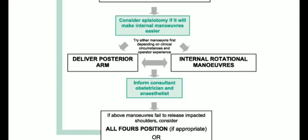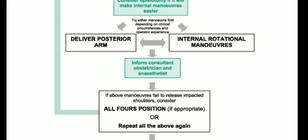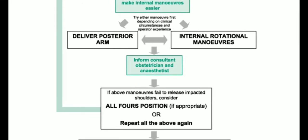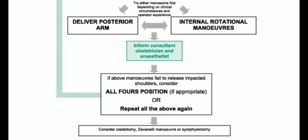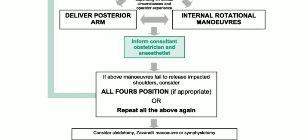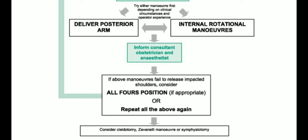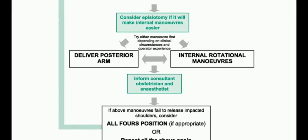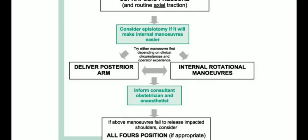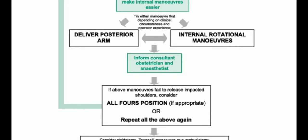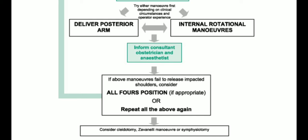I will give the link in the description. If those maneuvers fail, immediately inform the consultant, obstetrician, and anesthetist. If all the above maneuvers fail to release the impacted shoulder, consider the all-fours position if appropriate. In the all-fours position, ask the patient to go onto hands and knees and repeat all the maneuvers — McRoberts again, suprapubic pressure, delivery of the posterior arm, and internal rotation maneuvers.